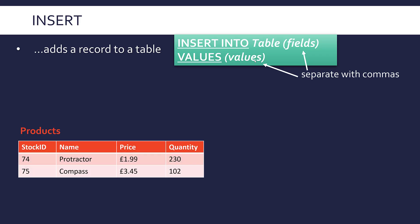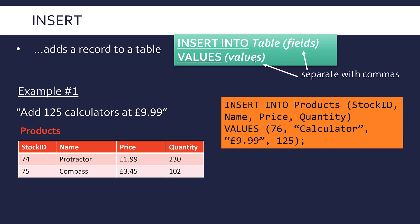So let's do it in a couple of examples on a really simple table called Products, with a few different math-related things. We've got StockID, the name, the price, and the quantity as our four fields. My first example, I want to add another record showing we've got 125 calculators at the price 9.99. So I want to add another row to this table.